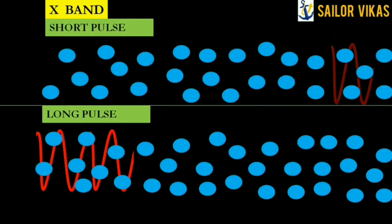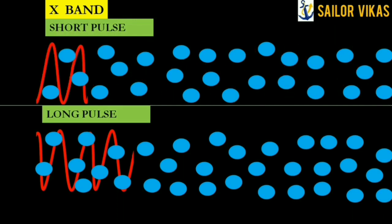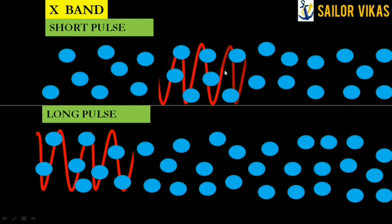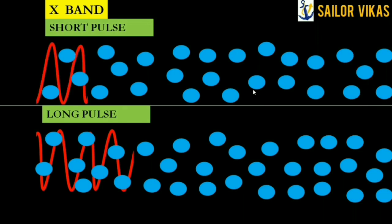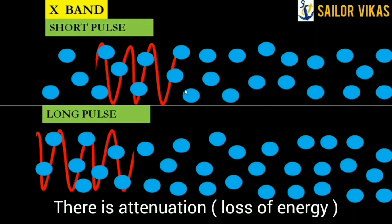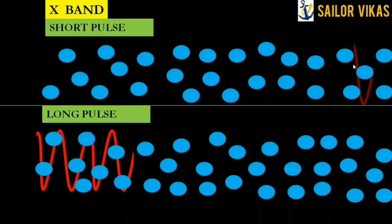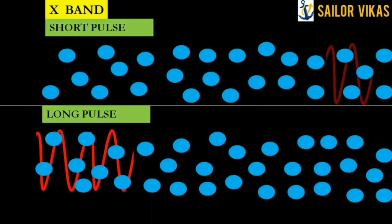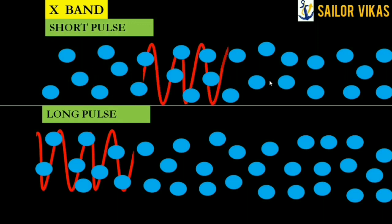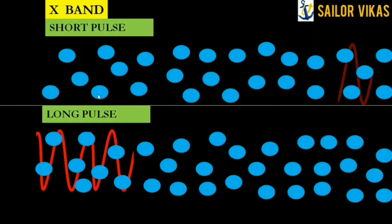You can see that the red color of the short pulse is getting lighter and lighter, which means there is attenuation. Attenuation is because of absorption and scattering. The energy of the short pulse is getting consumed because it is hitting so many water molecules and oxygen molecules, and that is why it is getting attenuated.